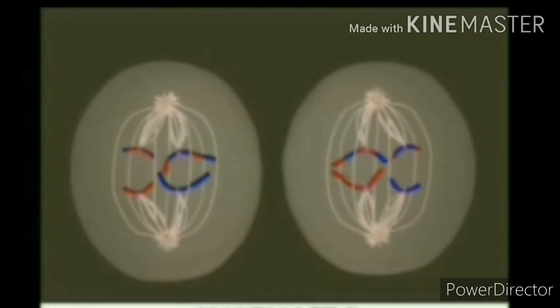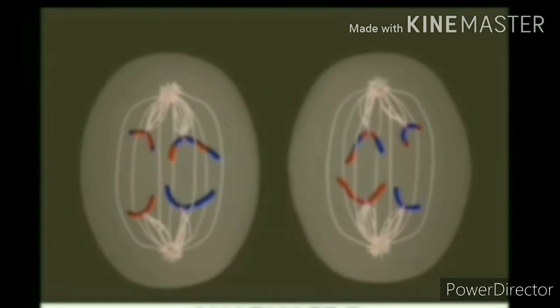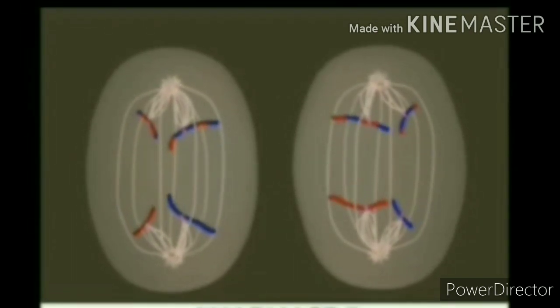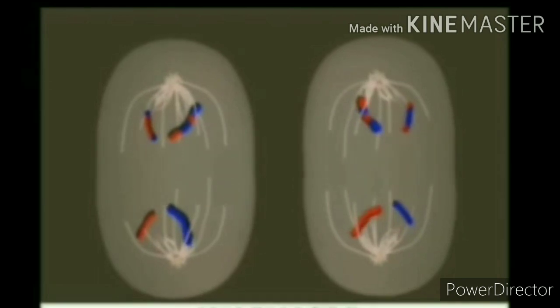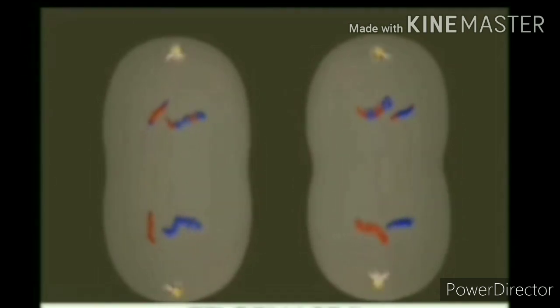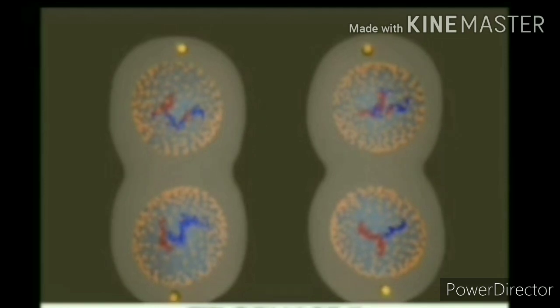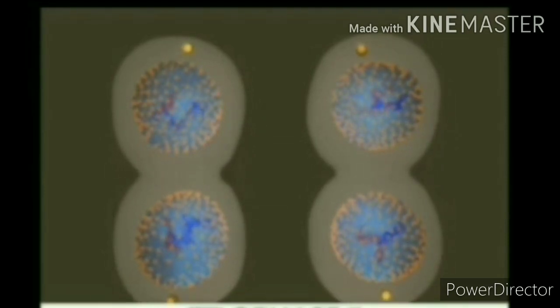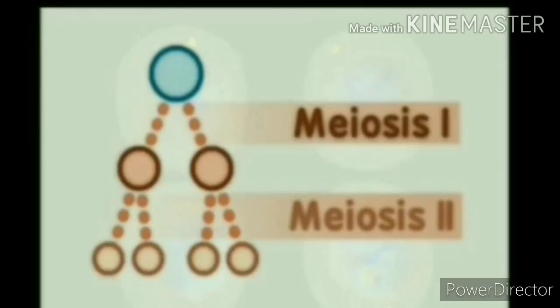In anaphase second, the sister chromatids separate due to spindle fibers or microtubules shortening, and they move to the opposite poles. In telophase second, the nuclear membrane reforms and the cytoplasm is divided into two haploid daughter cells from each previous daughter cell — this division is called cytokinesis. So meiosis first produces two cells from the parent cell, and meiosis second produces two cells from each previous cell. Thus, four haploid cells are produced at the end of meiosis.